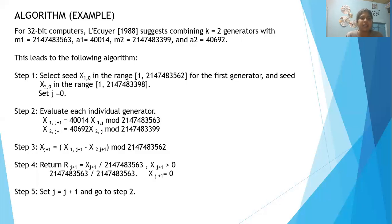Step 2 is to evaluate each individual generator. We consider the value X_i,j+1 for the first generator